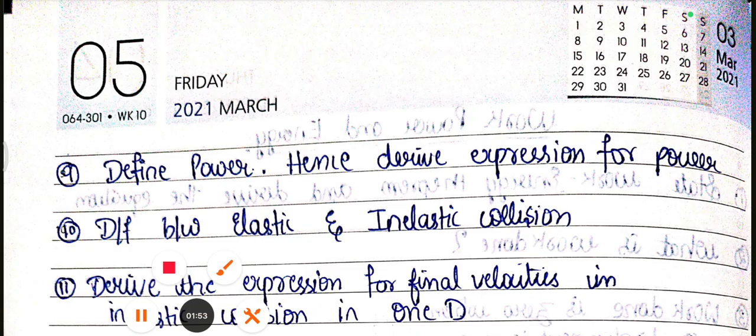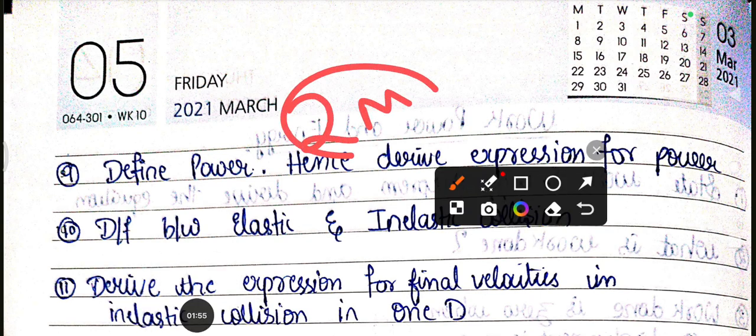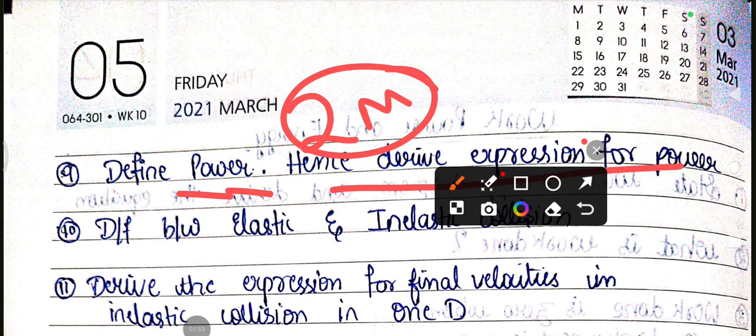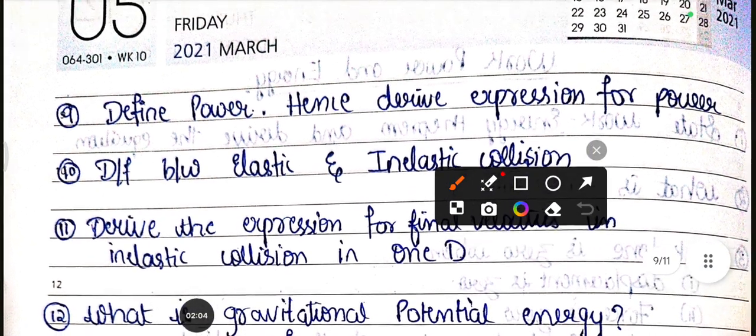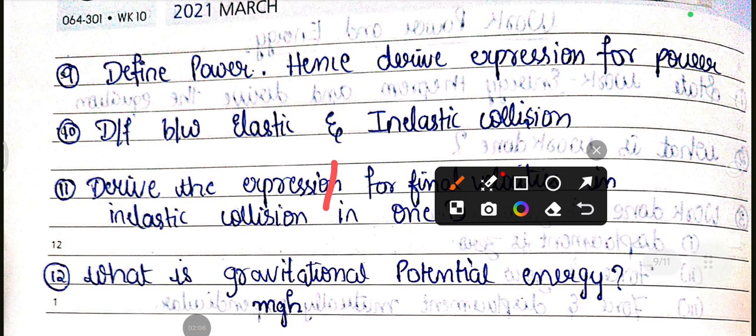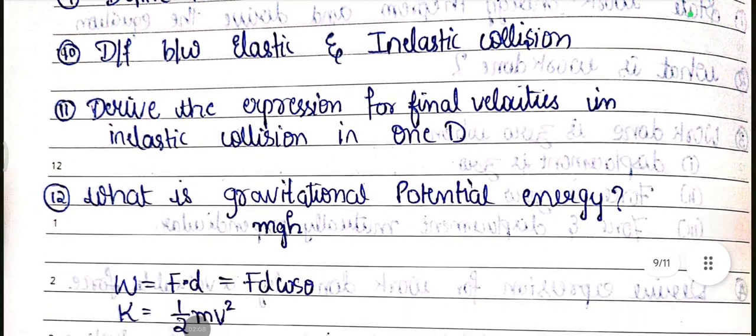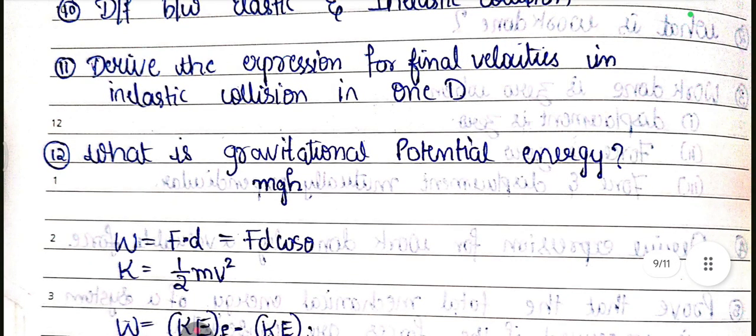Define power. This is very very important for two marks. Textbook definition. And hence, derive expression for power. Next, difference between elastic and inelastic collision - two marks. And derive expression for the final velocities in inelastic collision in one dimension. This is 3 marks.